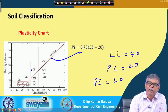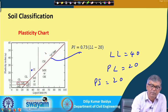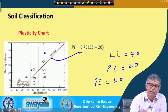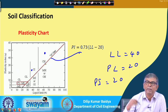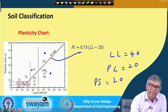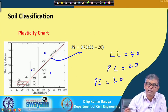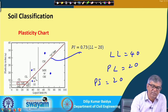When the point comes in a certain region, the soil is classified as CI — clay of intermediate plasticity. If the point comes in another region, the soil is CH — clay of high plasticity. If the point falls in yet another region, the soil is MH — silt of high plasticity, or OH — organic of high plasticity. Another region indicates MI — silt of intermediate plasticity, or OI — organic of intermediate plasticity.